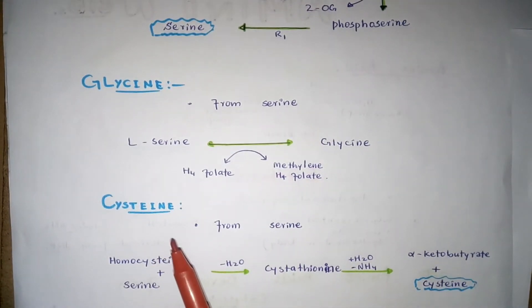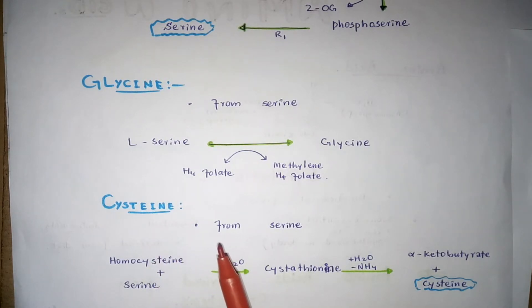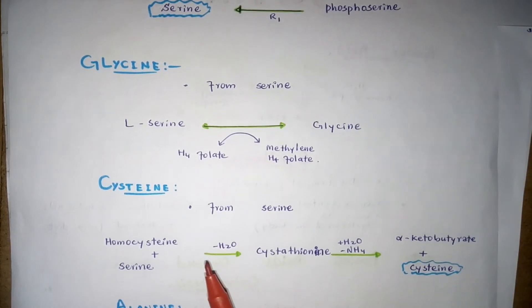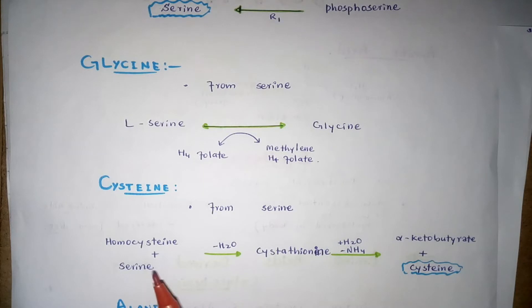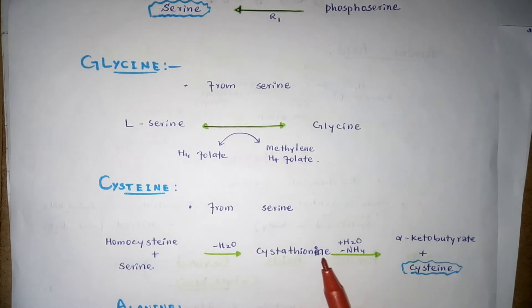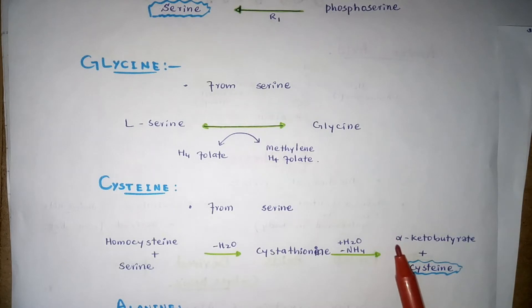Formation of cysteine: cysteine and glycine can also be derived from serine. Cysteine is formed from serine as it derives its carbon and nitrogen from serine. It can also be synthesized from homocysteine. In this reaction, homocysteine and serine react to form cystathionine, and then cysteine is subsequently formed from cystathionine along with alpha-ketobutyrate. Here is the reaction step.